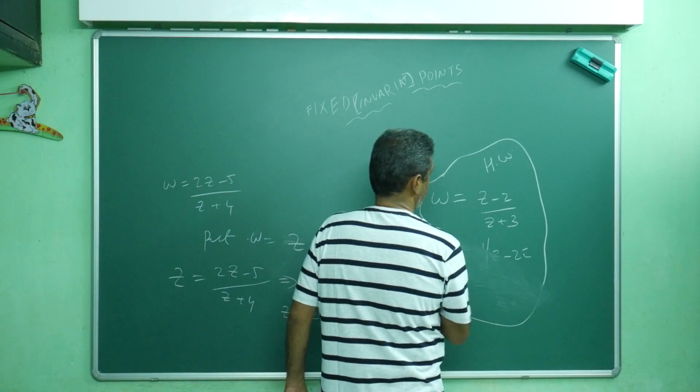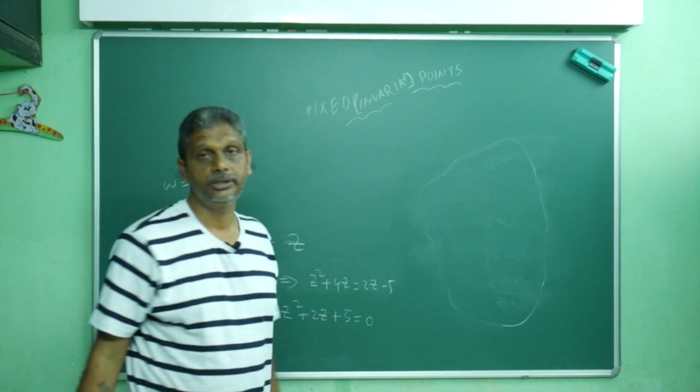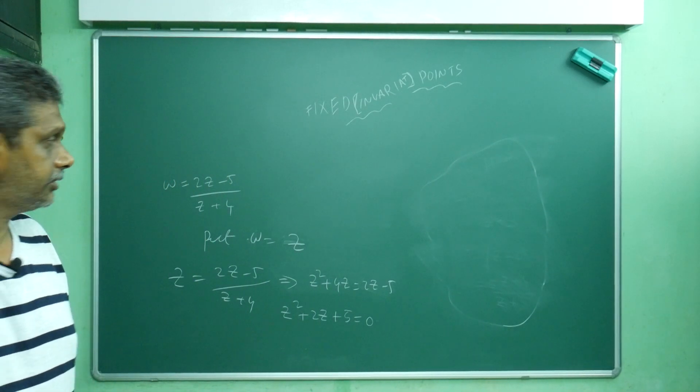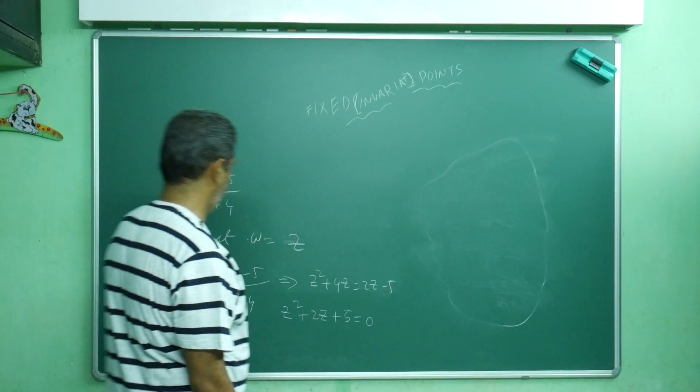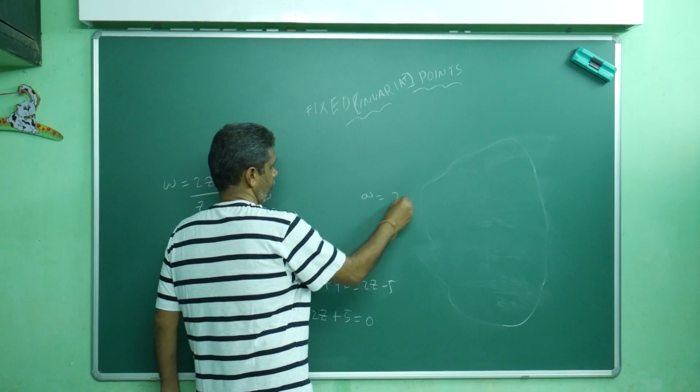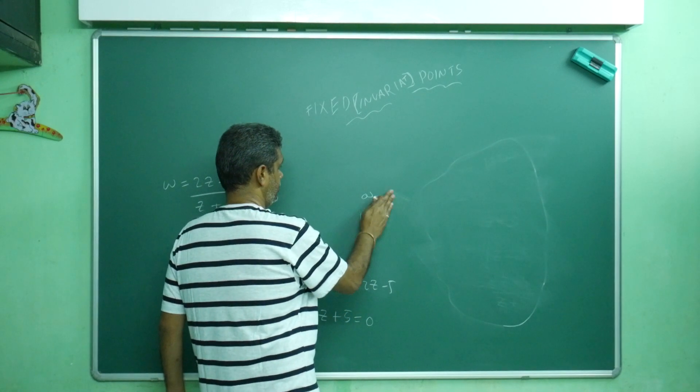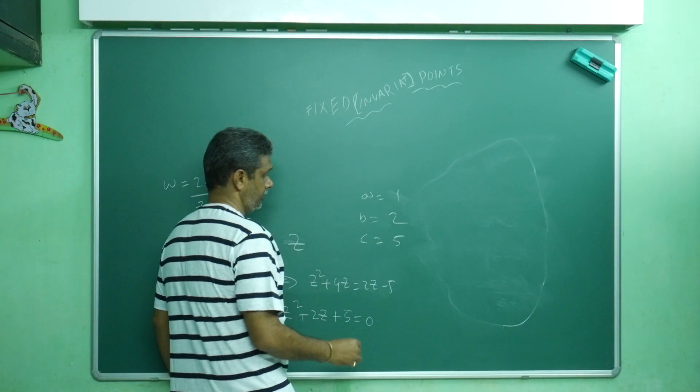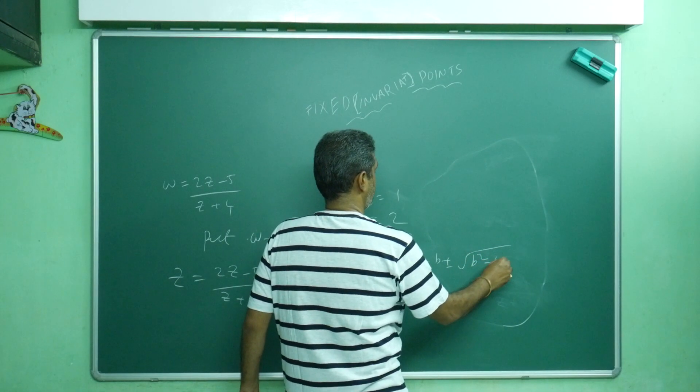If the discriminant is greater than 0, roots are real and unequal. If equal to 0, roots are real and equal. If less than 0, roots are complex. These you studied in 10th standard. Now, in our equation: a equals 1, b equals 2, c equals 5.